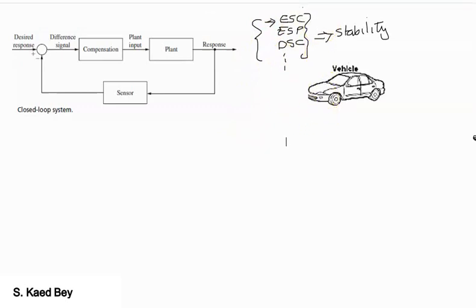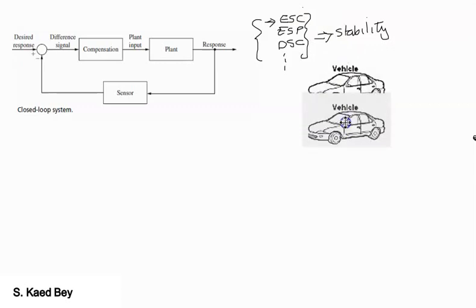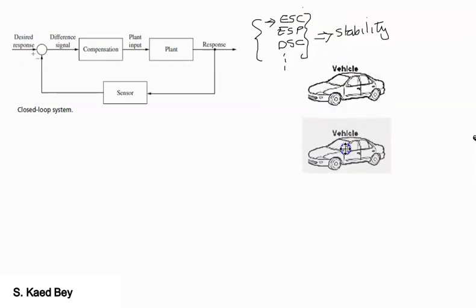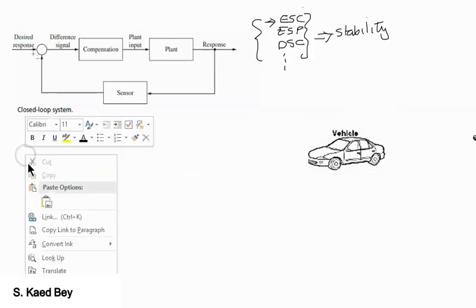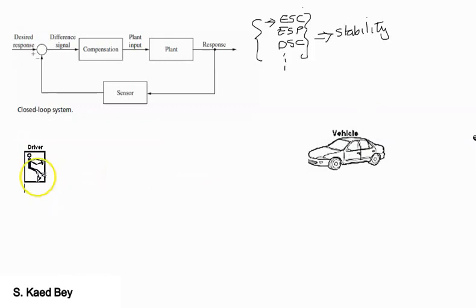If we were to present the electronic stability control in a block diagram format, perhaps we could consider this vehicle as our plant. Starting from the user or desired input, then this will be the steering wheel.